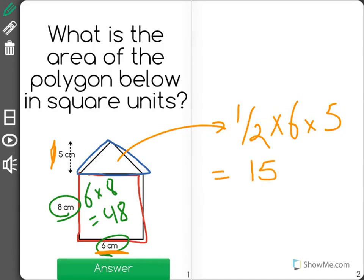And so the total amount of area is going to be the two combined. So 48 plus 15 equals 63. And that's our answer.